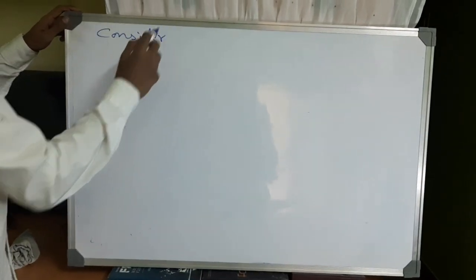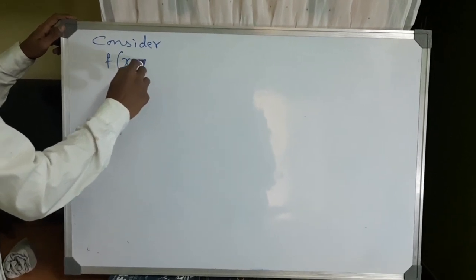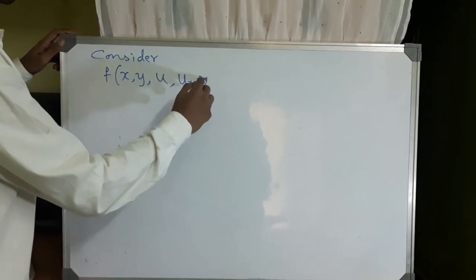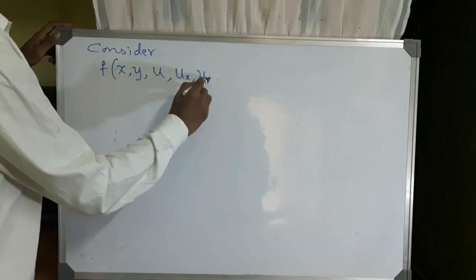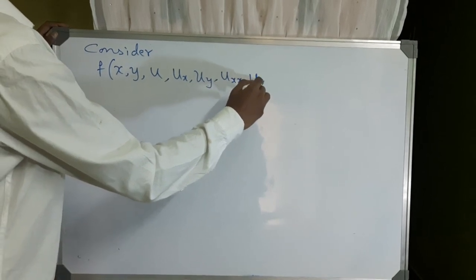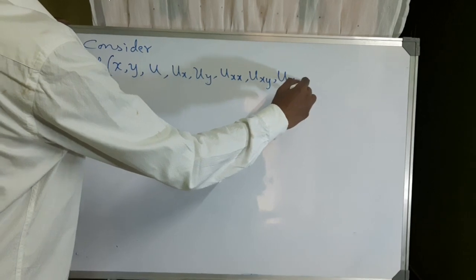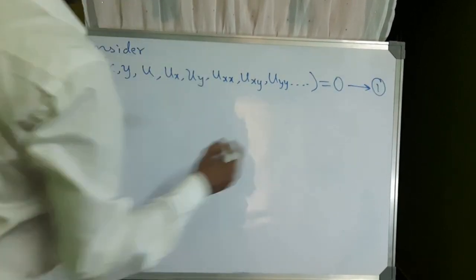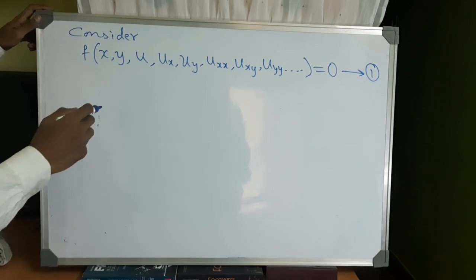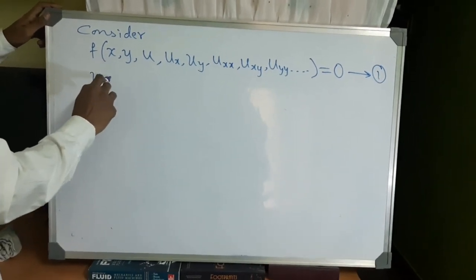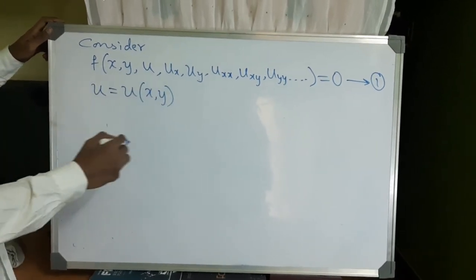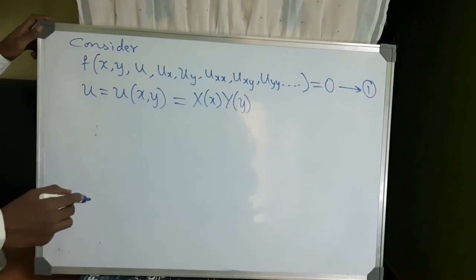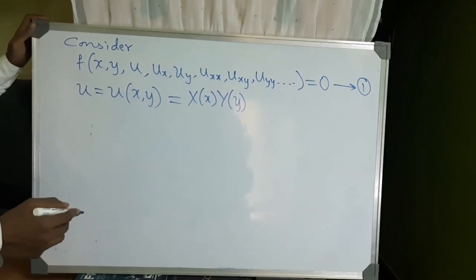Consider a PDE of the form f of x, y, u, ux, uy, uxx, uxy, uyy and so on. This we will call equation 1. In the method of separation of variables, we assume u, which is a function of two independent variables x and y, to be of the form capital X into capital Y, where capital X is a function of x and capital Y is a function of y.